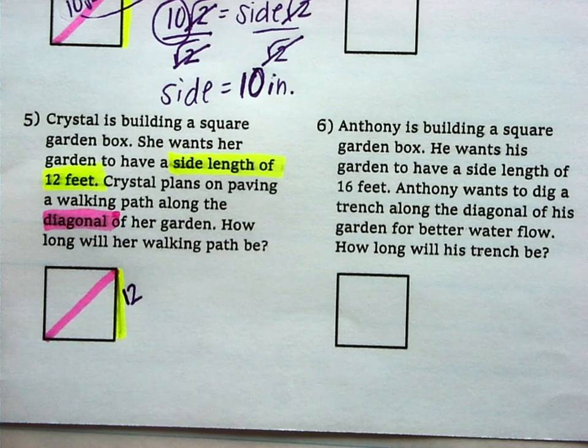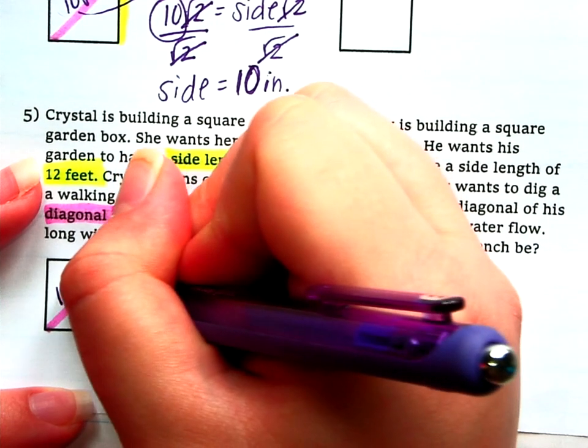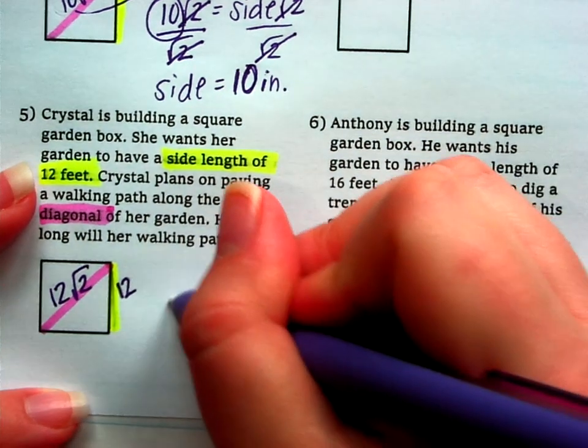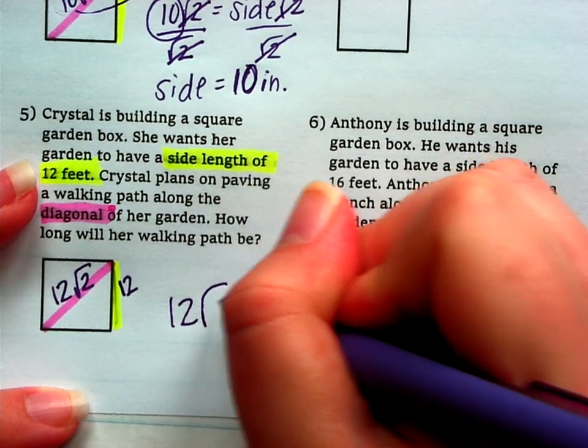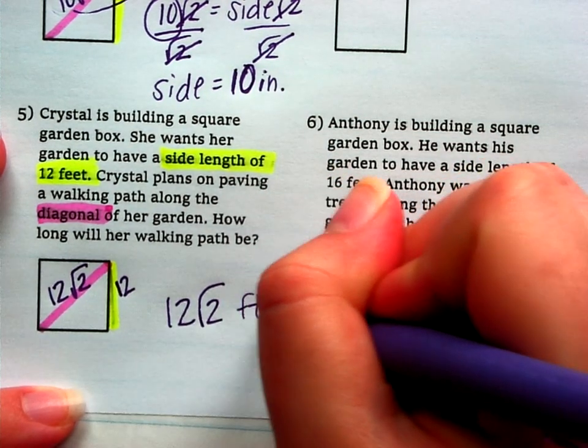Yeah, just multiply by Radical 2. So, we're going to take this 12 and multiply by Radical 2. So, Crystal's walking path will be 12 Radical 2 feet long.